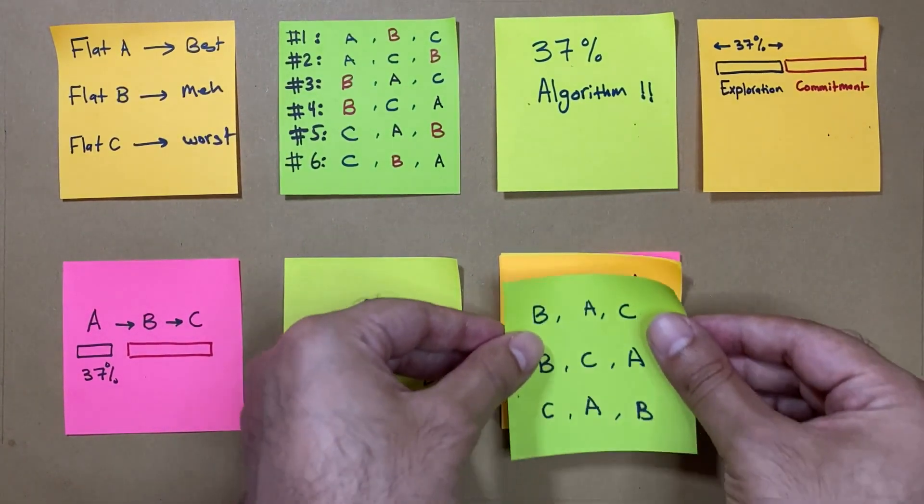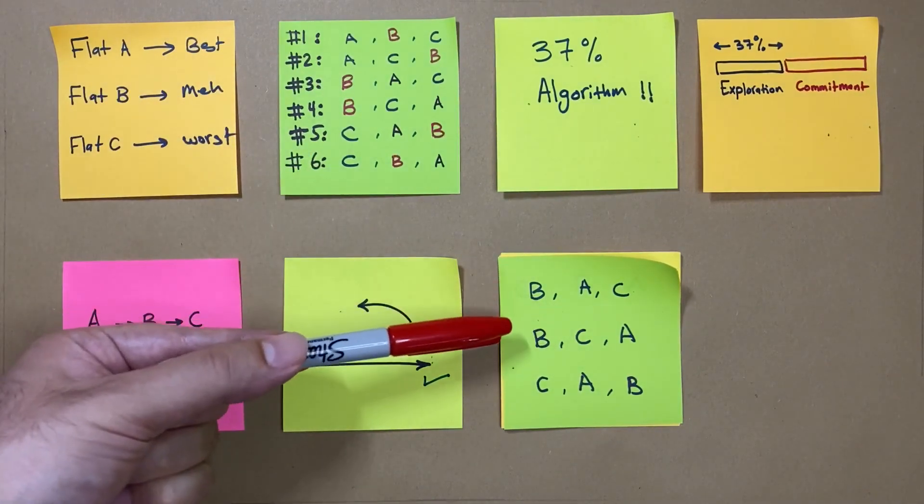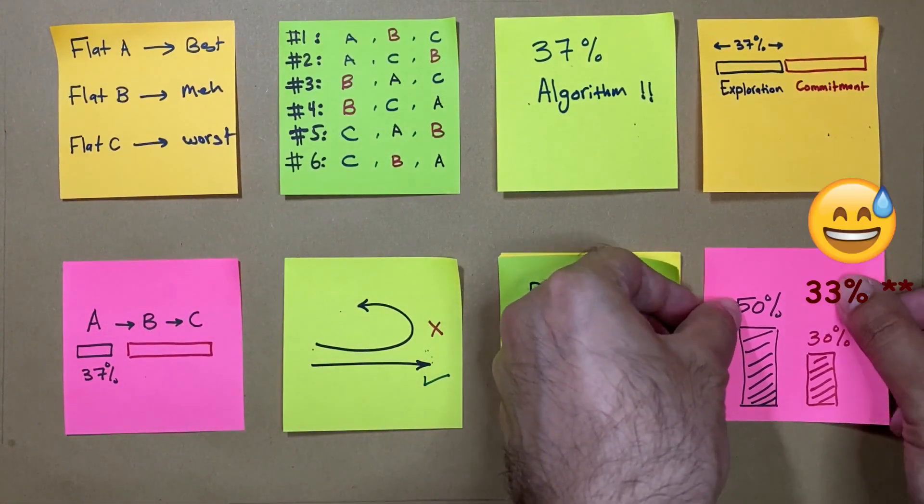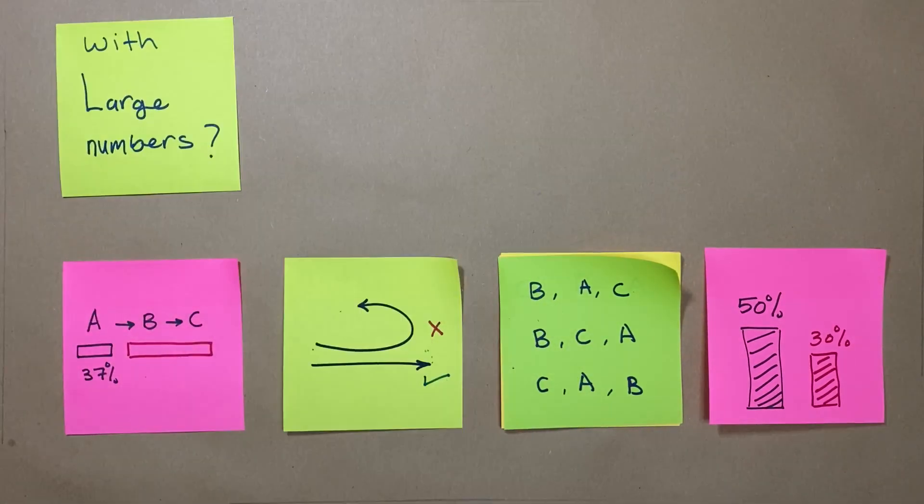And so on. If you try all six possible orderings, the algorithm success rate reaches 50%, three cases out of six, which is a considerable improvement over the random selection, which is 33%.